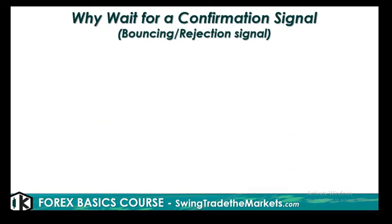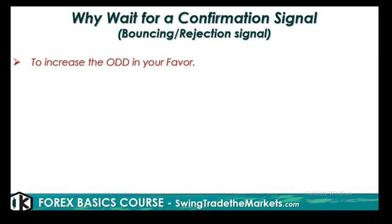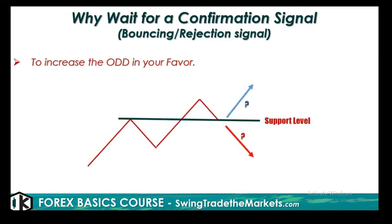Why wait for a confirmation signal? Specifically, what we look for is a bouncing and rejection signal. As mentioned, there are three possibilities when price is at a key support or resistance: it can stall, it can reject or bounce, or it can break out. The first reason to wait is to increase the odds in our favor. Trading is a game of probability — we really do not know 100% where price heads next, it can go up or down, but we can increase the odds or chance of price going in a certain direction.